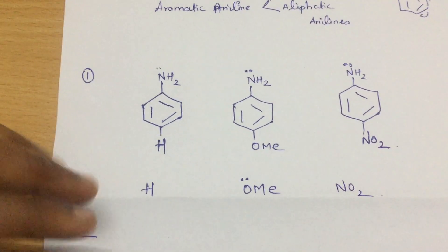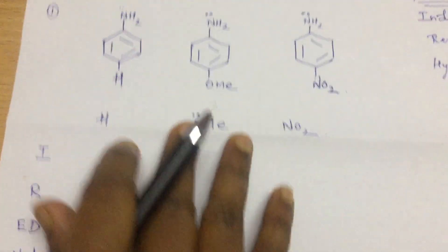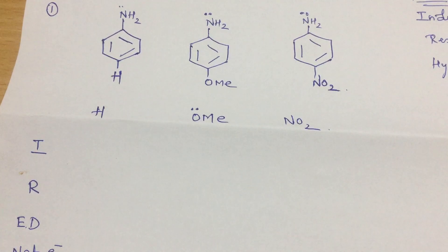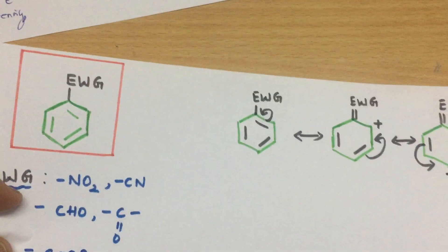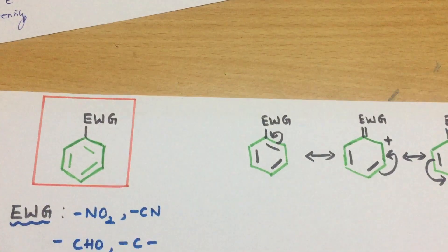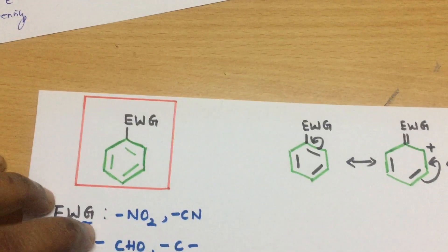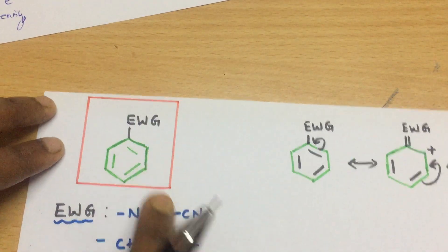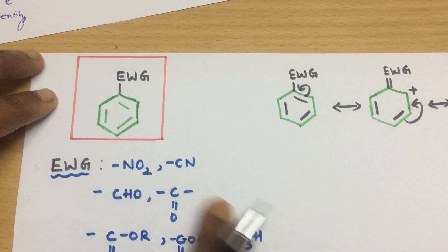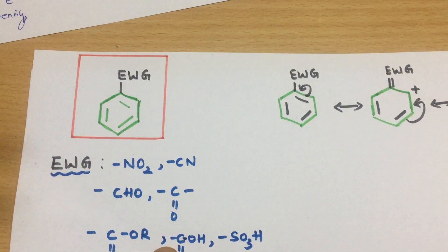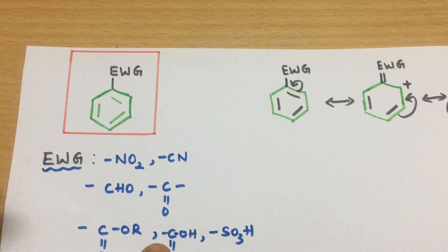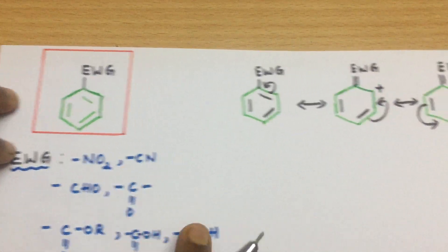Before solving these problems, I want to discuss something important. In aromatic systems, if the benzene ring is attached to an electron withdrawing group — what are the electron withdrawing groups? These are nitro, cyano, or any carbonyl group: it can be aldehyde, ketone, acid, or ester.